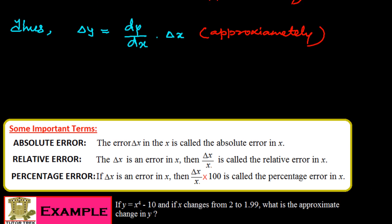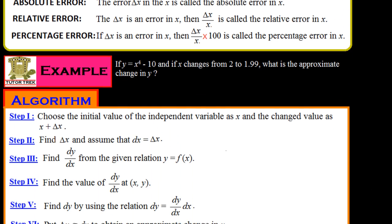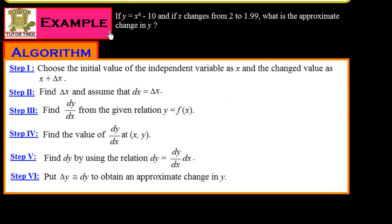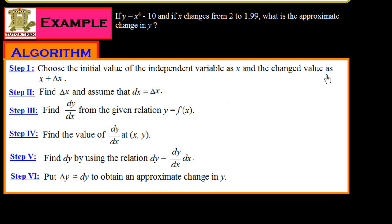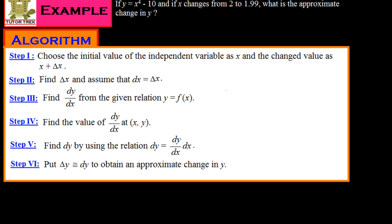Let us see one example. If y = x⁴ - 10 and x changes from 2 to 1.99, what is the approximate change in y? For this type of error and approximation problem, we follow a step-by-step algorithm. Step 1: choose the initial value of the independent variable as x, and the changed value as x + δx.